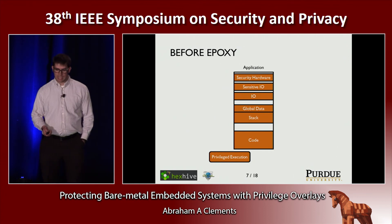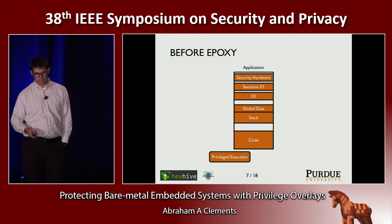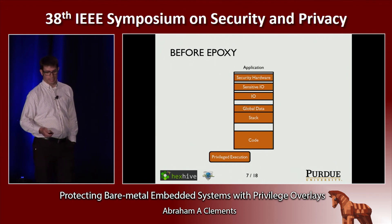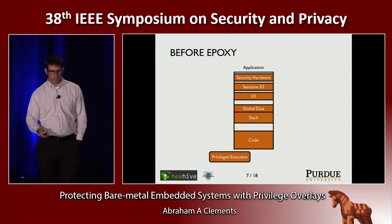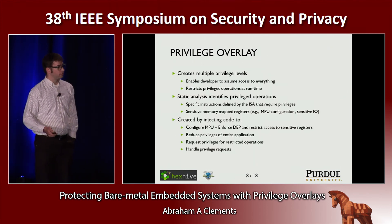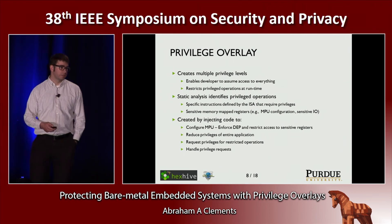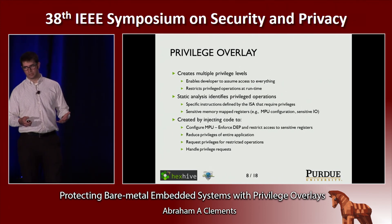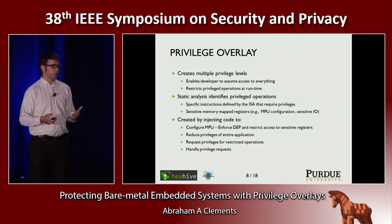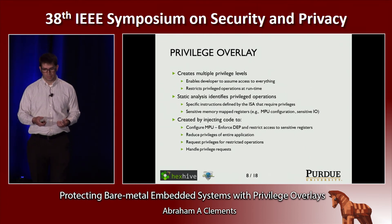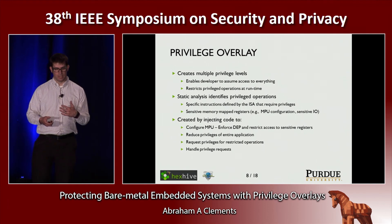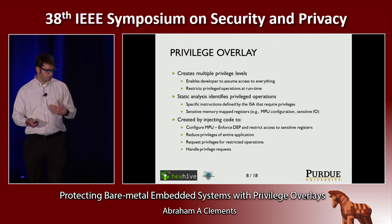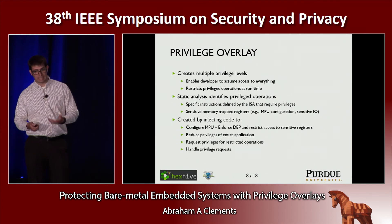As I go through this presentation, I'll take the application shown here and build up defenses around it. The application's memory space starts with everything privileged and everything accessible. The first approach is called privilege overlay, which creates multiple privilege layers. It enables the developer to assume access to all memory locations. The application has to manage all the hardware and needs to be able to access it, but for security we need to restrict access to some of it — for example, the memory protection unit. If the developer enables it but everything stays privileged, it's easily turned off. However, this one application still has to be able to enable the memory protection unit.